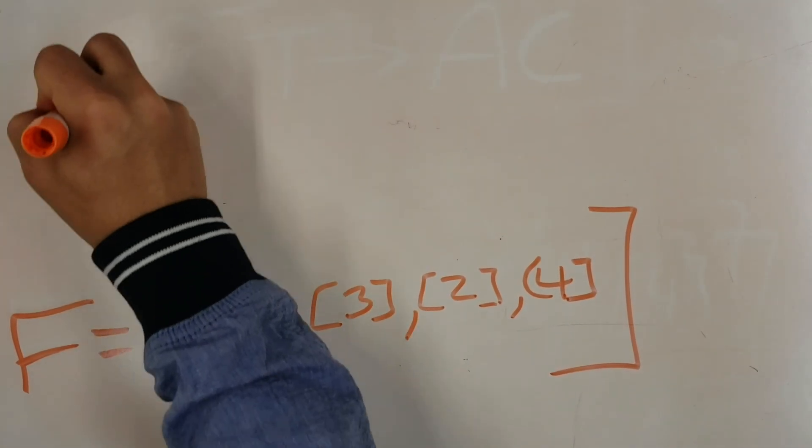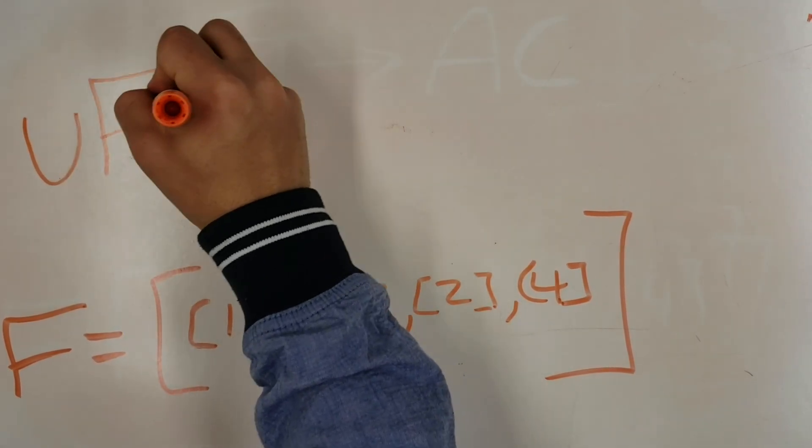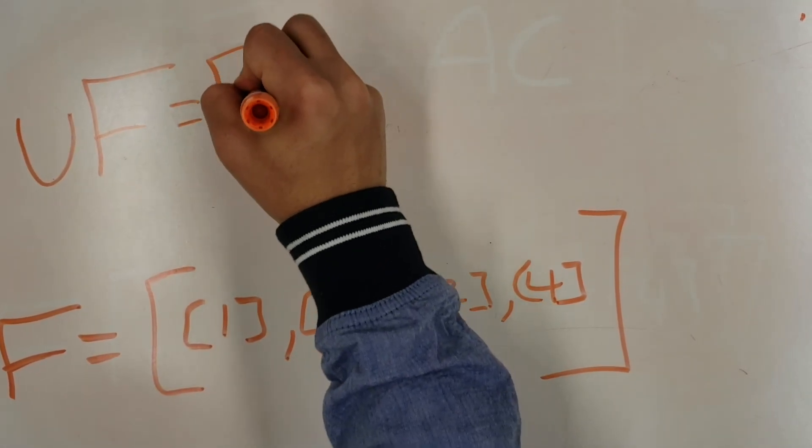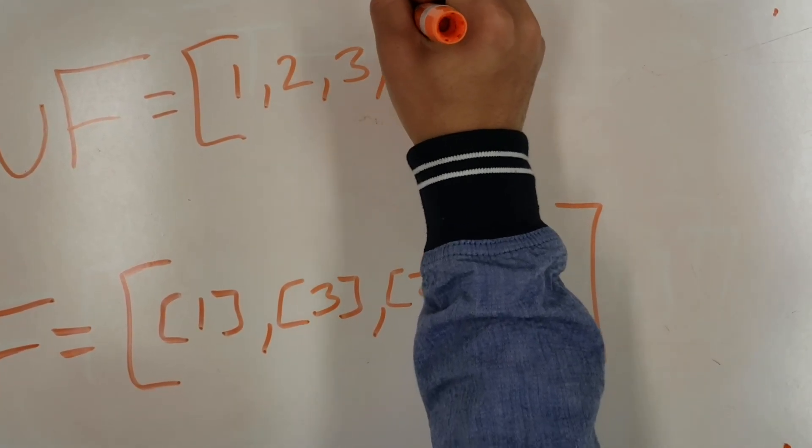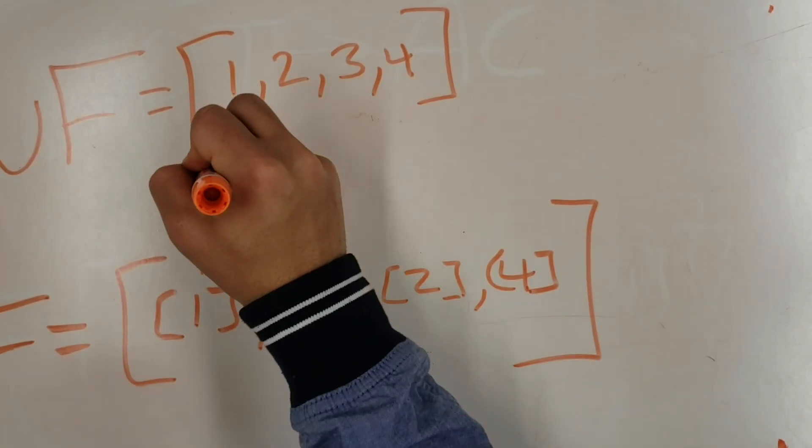Thus we can define a choice function that iterates over all the sets in F as a mapping between all the sets in F and the elements in UF, by letting the choice function be the least element of the set X under less than.